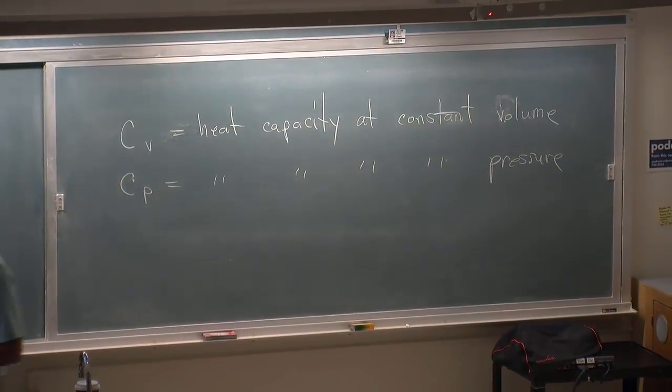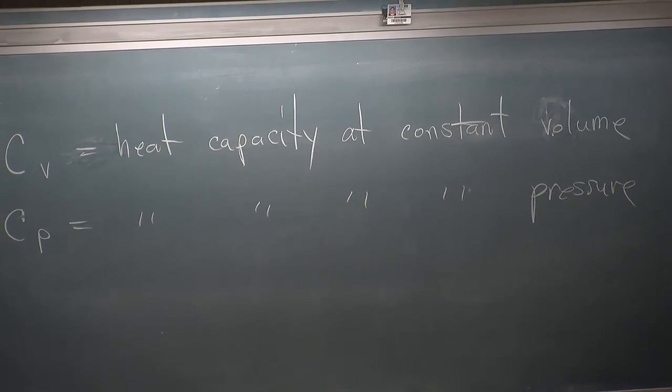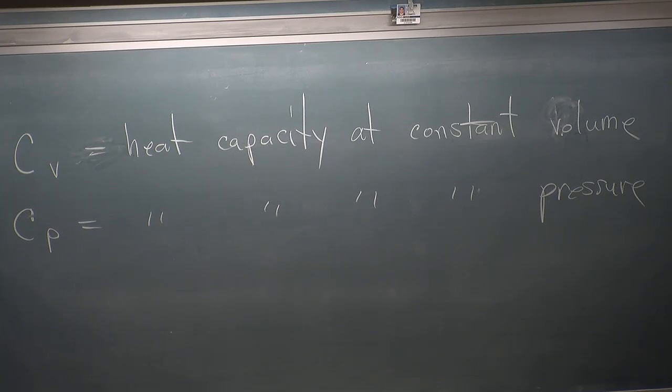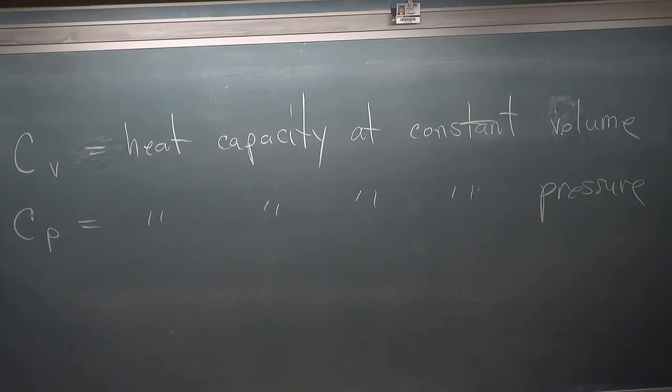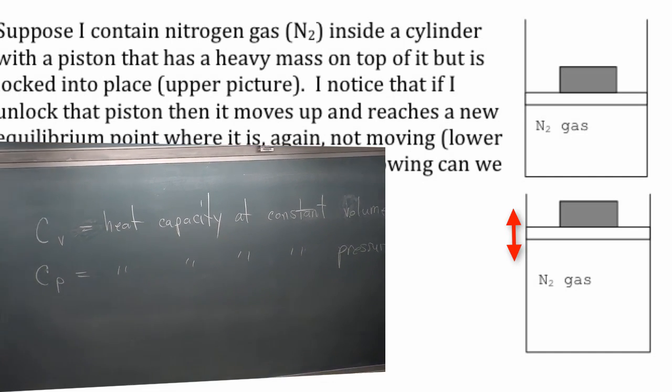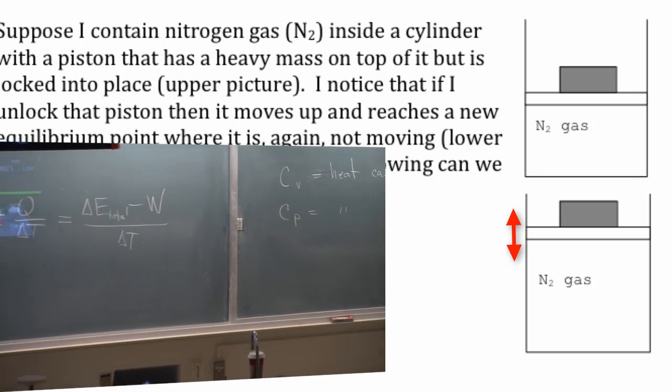And the other fairly easy one to do is heat capacity at constant pressure. Add heat, let the pressure stay constant. How would I do that? Well, I would unlock this thing so the piston could move up and down. So now it would be right here maybe. And once I found it, now that the piston can move up and down freely,